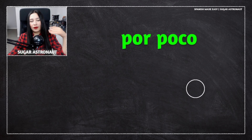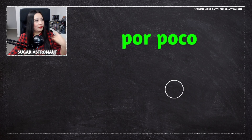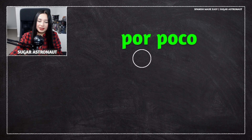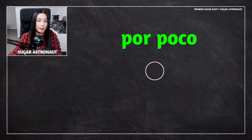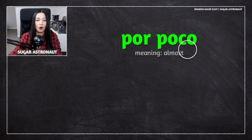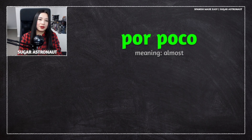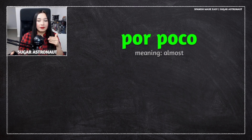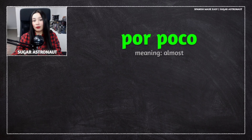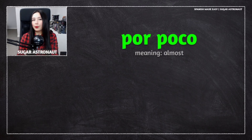Por poco. What does this mean? Por poco means almost. There's another Spanish word for this: casi. Casi means also almost, but you can also say por poco.